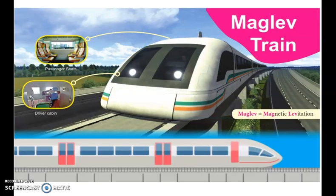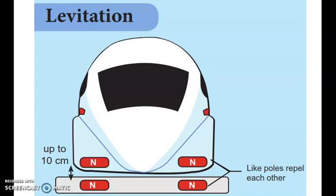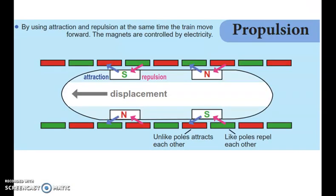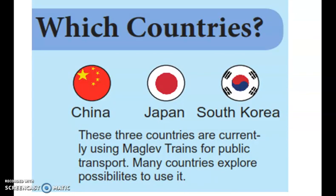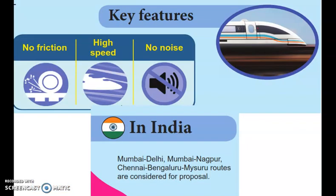The next concept is the Magnetic Levitation Train, or Maglev Train. The train's bottom is set to north pole and the track is also north pole, so they repel each other and the train levitates. Key features are no friction, very high speed, and no noise.